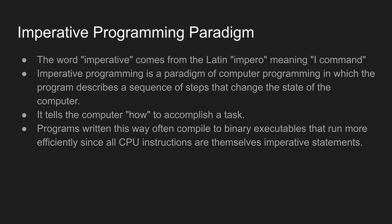Programs written in this way often compile to binary executable code that runs more efficiently, since all CPU instructions are themselves imperative statements. For example, statements to run the CPU fan or to switch a machine on or off are imperative statements written efficiently to save memory and time. Similarly, if you follow the imperative programming paradigm, your program compiles to binary executable code that runs efficiently in terms of both memory and time.